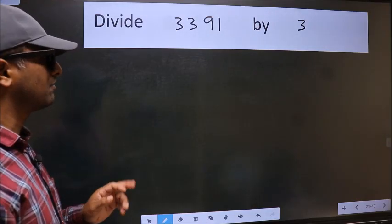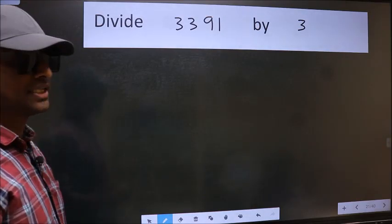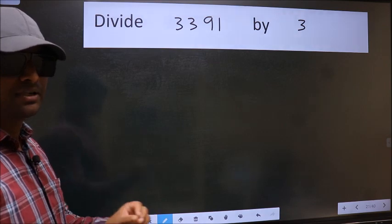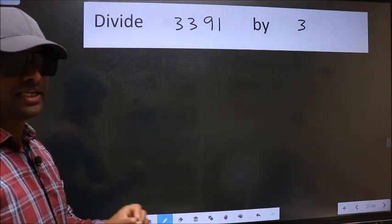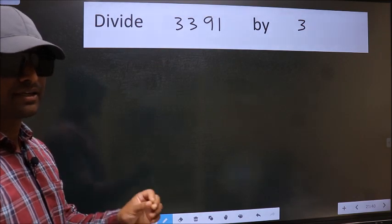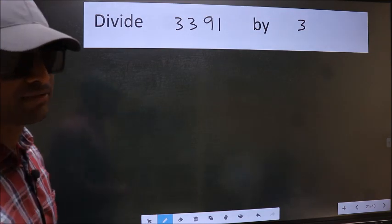Divide 3391 by 3. While doing this division, many do this mistake. What is the mistake that they do? I will let you know. But before that, we should frame it in this way.